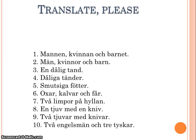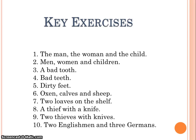Now take a few moments to translate these sentences. You can put the film on pause if you need more time. The men, the woman, and the child — men, women, and children. A bad tooth, bad teeth, dirty feet, oxen, calves, and sheep. Two loaves on the shelf, a thief with a knife, two thieves with knives, and two Englishmen and three Germans.